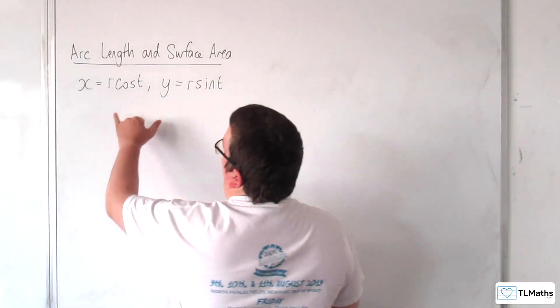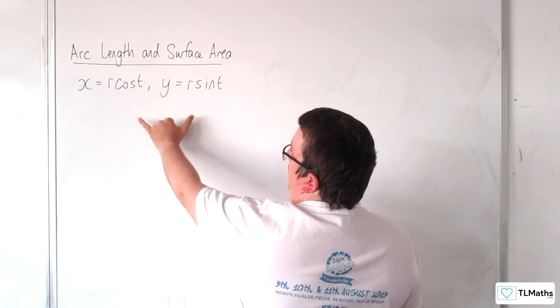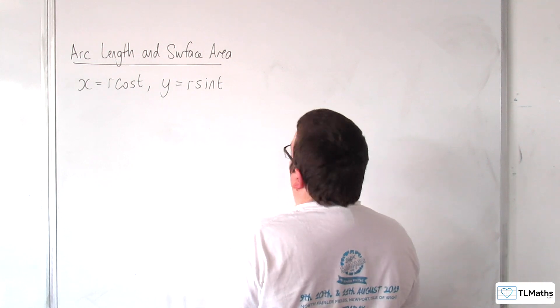Now, a circle centered at the origin with radius r can have these parametric equations here.